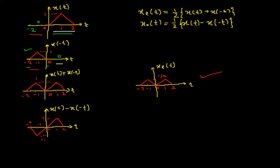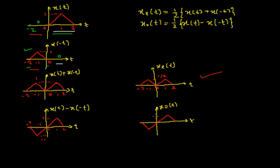This is the subtraction of the two signals X(t) and X(-t). The last task is to draw the odd part of the signal by dividing by 2. The shape of the signal does not change, but the amplitude gets divided by 2 — so it becomes 1/2 on the positive side and minus 1/2 on the negative side, giving the final odd part Xo(t).